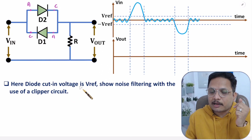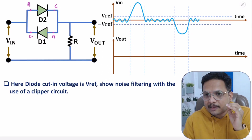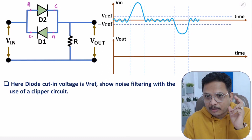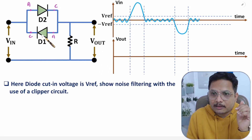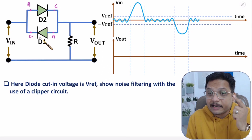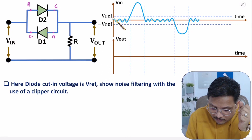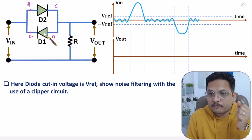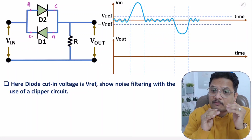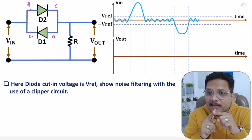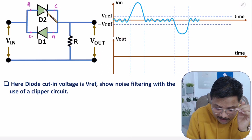Cut-in voltage explains that if you give a voltage greater than V_ref in forward bias, then only the diode will turn on; otherwise the diode will be off. So to make D1 and D2 conduct, we need to give forward bias greater than V_ref. In between V_ref and minus V_ref, both diodes will be off, because to have conduction the forward bias voltage must be greater than the cut-in voltage.